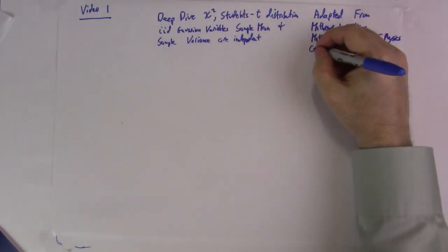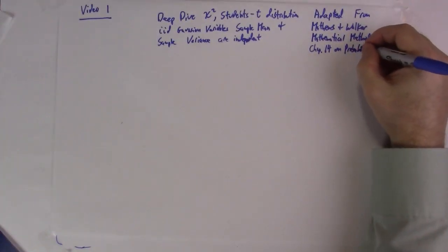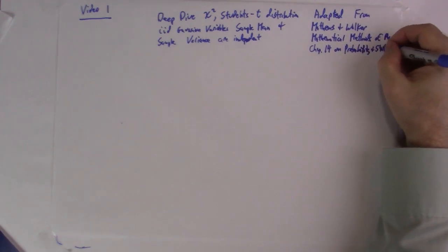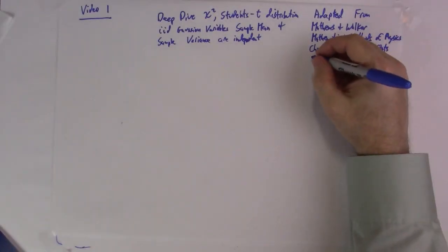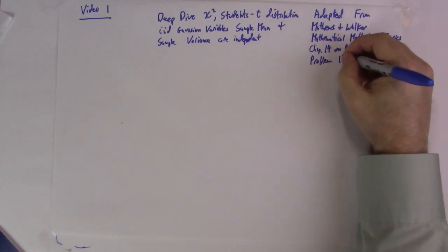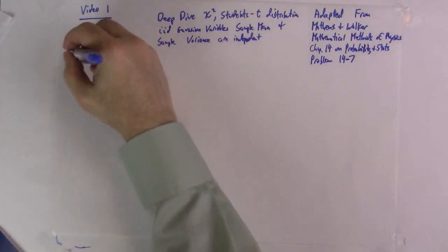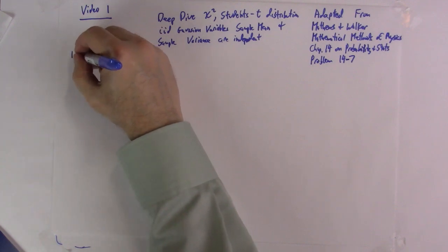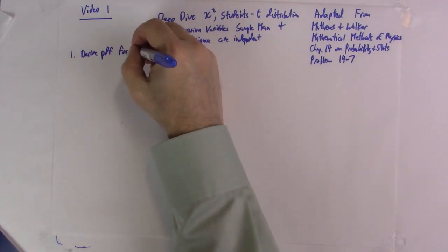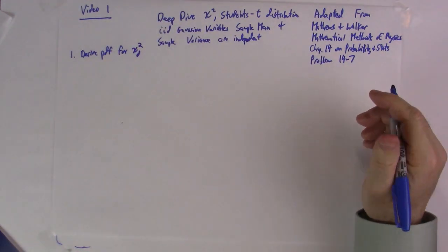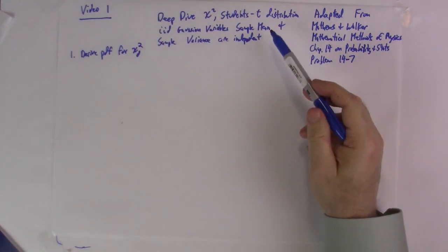Chapter 14 is on probability and statistics. It's a pretty short chapter but it covers a lot, and this is mostly problem 14.7. My goal, I'll start in this video by deriving the PDF for chi-squared with d degrees of freedom, and then in subsequent videos I'll deal with the sample mean and sample variance and derive the student's t distribution.